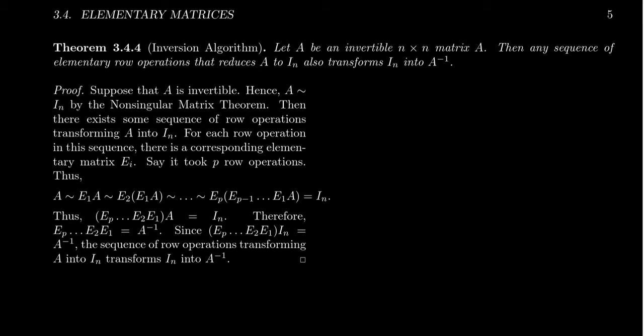So let's suppose we have an invertible matrix A. Then any sequence of elementary row operations that reduces A to the identity will also transform the identity into A inverse. We know by the non-singular matrix theorem that if A is non-singular, it'll be row equivalent to the identity matrix.